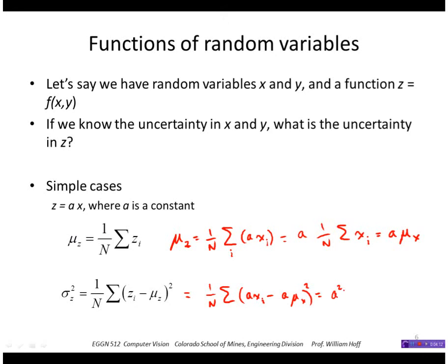And I get one over n times x sub i minus mu x squared, which is sigma sub x squared.